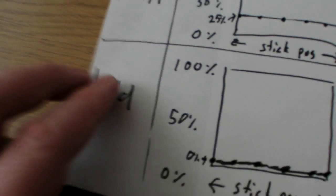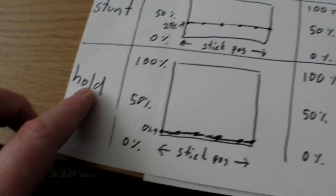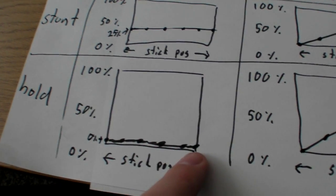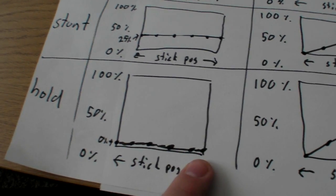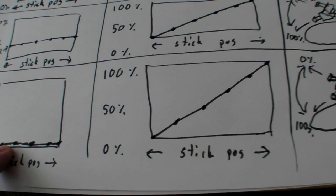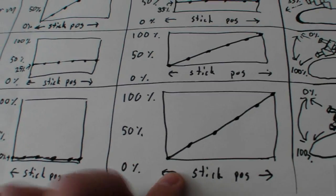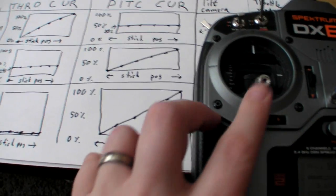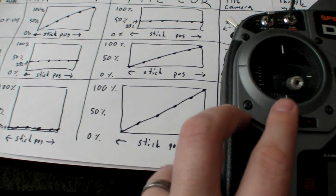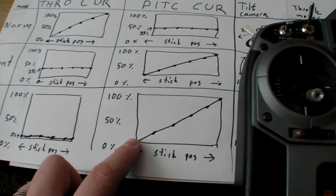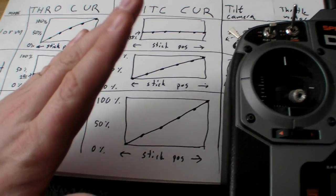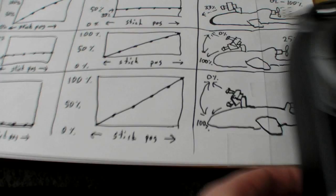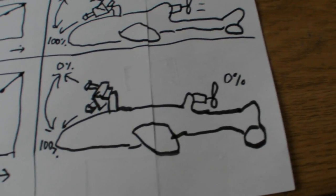In throttle hold mode, the entire throttle curve is 0%, meaning no throttle at all — the plane is just gliding. If you look at the pitch curve, the camera goes from 0 to 100%. When the stick is down, the camera is pointing up, and when the stick is up, the camera is pointing down. So I control the camera fully with the stick, and the motor is always at 0% in this mode.